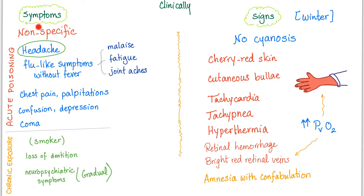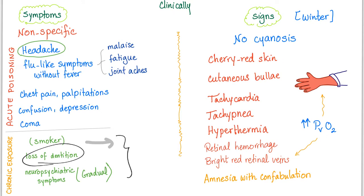Clinically, the symptoms are very non-specific, which is why CO poisoning is commonly misdiagnosed. Headache is the most common symptom. There are flu-like symptoms without fever: malaise, fatigue, joint aches, chest pain, palpitations, and eventually coma. Chronic exposure in smokers can cause loss of dentition. Neuropsychiatric symptoms develop gradually — unlike a stroke, which presents suddenly.